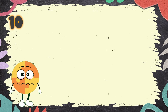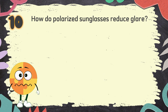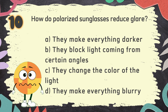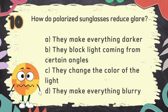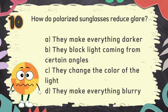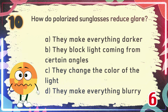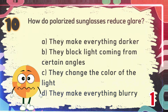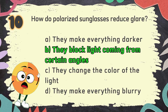Number 10. How do polarized sunglasses reduce glare? The choices are: A. They make everything darker, B. They block light coming from certain angles, C. They change the color of the light, D. They make everything blurry. The correct answer is B: They block light coming from certain angles.